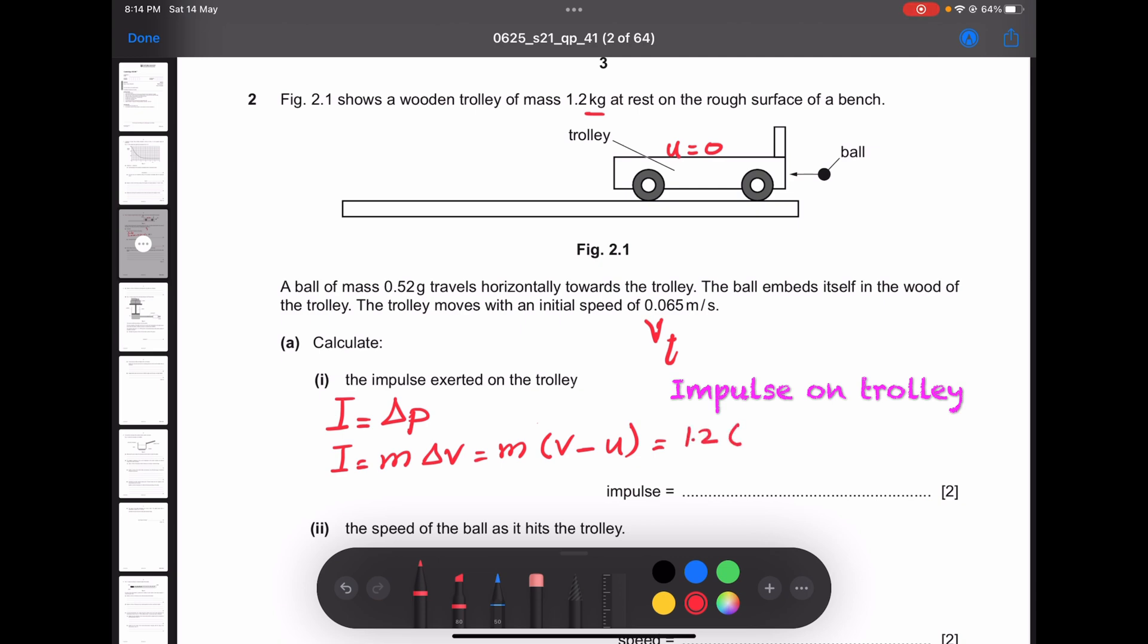Use a calculator to multiply 1.2 times 0.065, and the correct answer is 0.078 newton seconds.